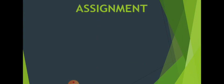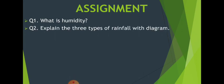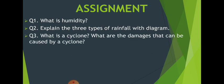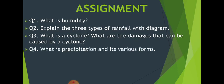Today we have learned about moisture, types of rainfall, and cyclones. For the assignment: Question 1 — What is humidity? Question 2 — Explain the three types of rainfall with a diagram. Question 3 — What is a cyclone and what damages can it cause? Question 4 — What is precipitation and its various forms? I hope you understood today's topics well. If you still have doubts, you can always ask. Thank you and have a nice day.